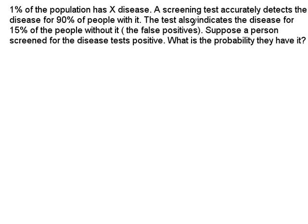There's a screening test available for this, which will accurately detect it in 90% of the people that actually have the disease. But the test also has what's known as false positives — namely, it will indicate that 15% of people who do not have the disease actually have it. The situation a person is faced with is: supposing they take this test and it tests positive, we want to know what's the probability that they actually have the disease.